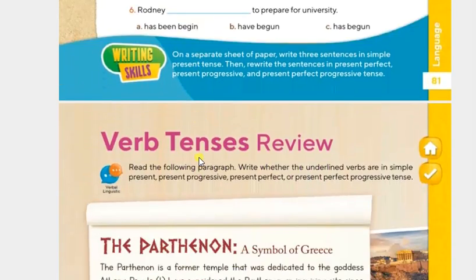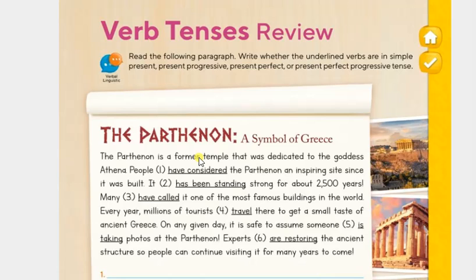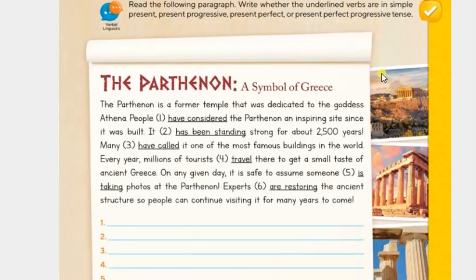That was page number 81. Now we go to page number 82, verb tenses review. We continue with these tenses. Read the following paragraph and write whether the underlined verbs are in simple present, present progressive, present perfect, or present perfect progressive tense.